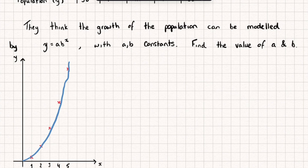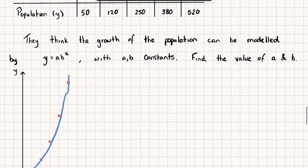So instead we're going to do something called reduction to linear form. We're going to turn this exponential equation into one of a straight line, the data will change from being an exponential curve to a straight line, and we can find the values of the gradient and y-intercept to find a and b. We start with our exponential equation y = a × b^x.